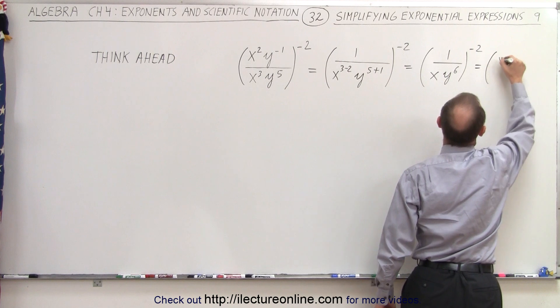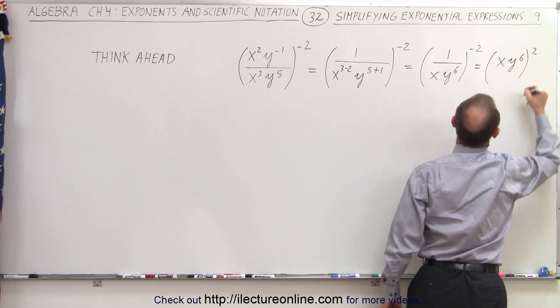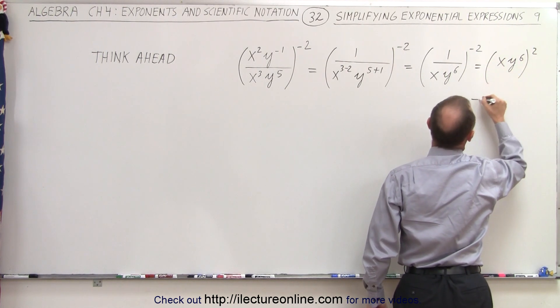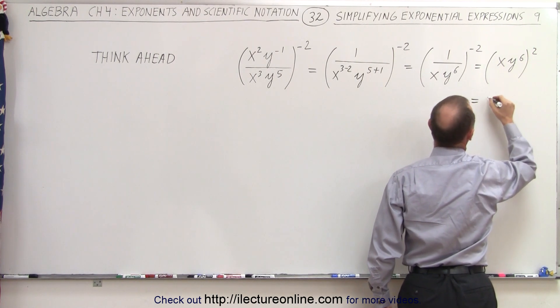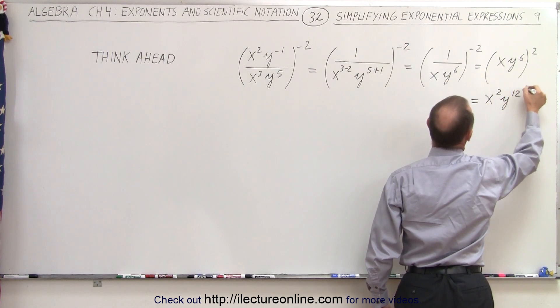So this is equal to x times y to the sixth, to the second power. And then when we apply that using the rule that if an exponent is raised to an exponent we multiply, this becomes x squared y to the twelfth power.